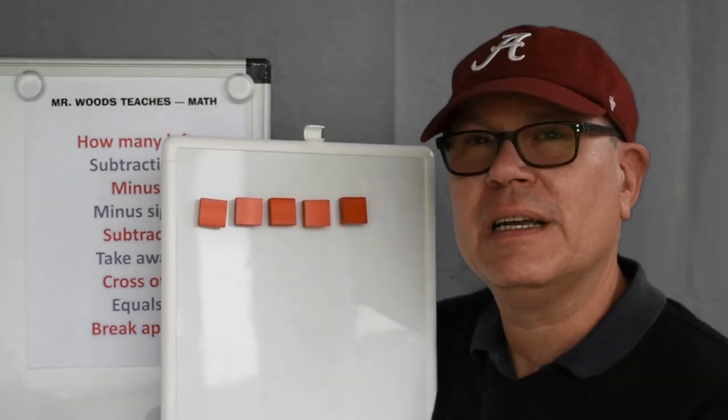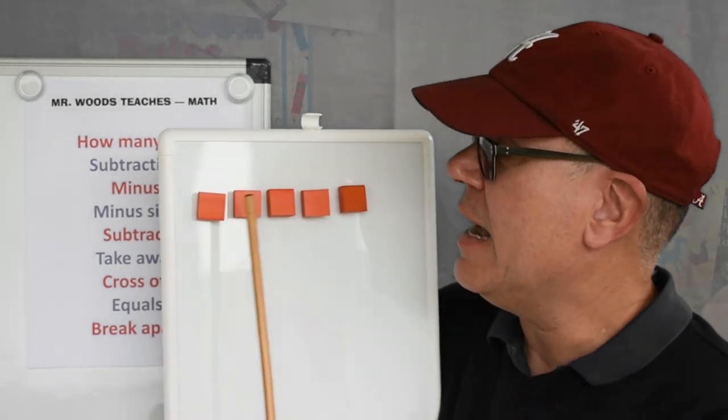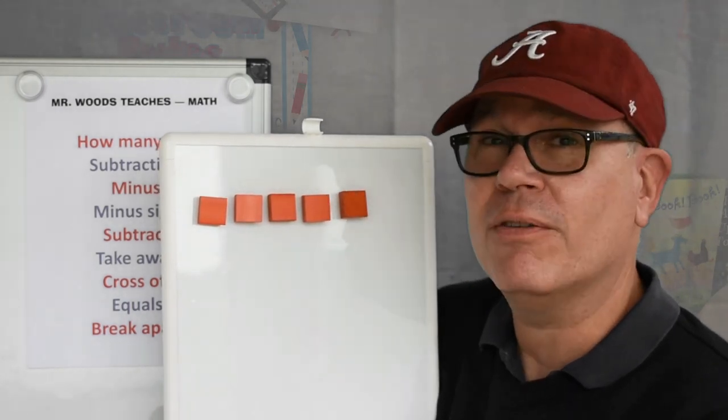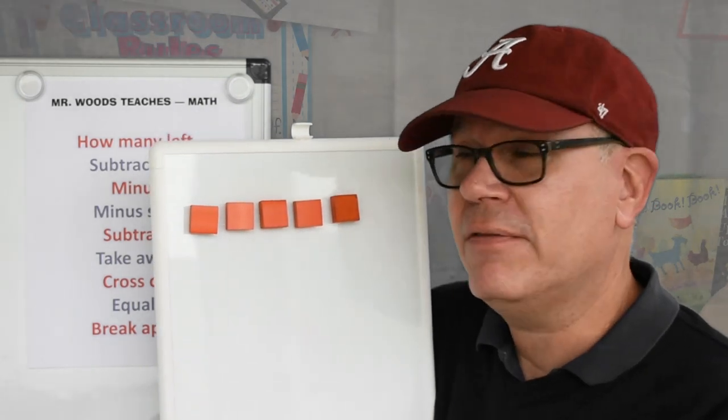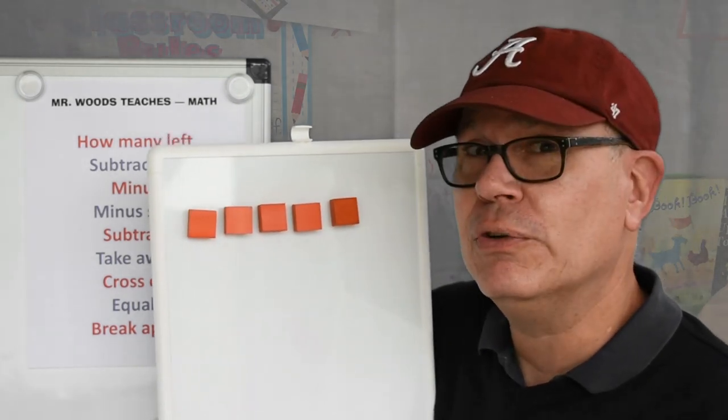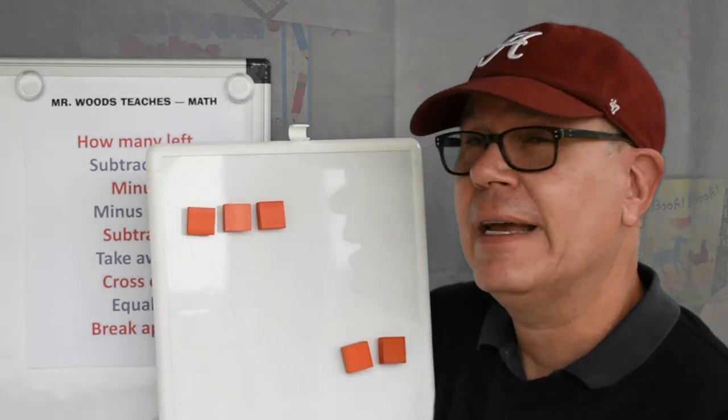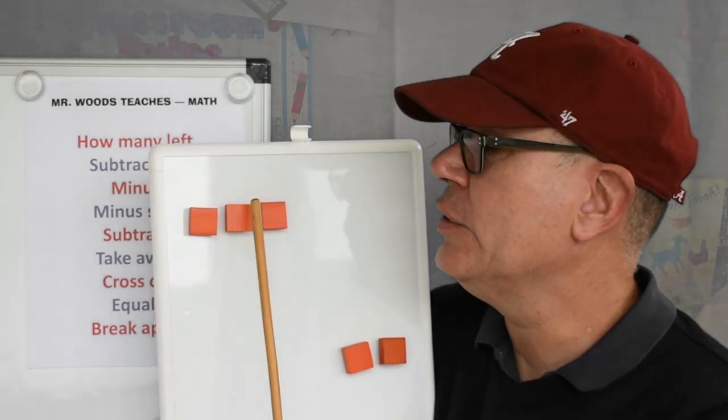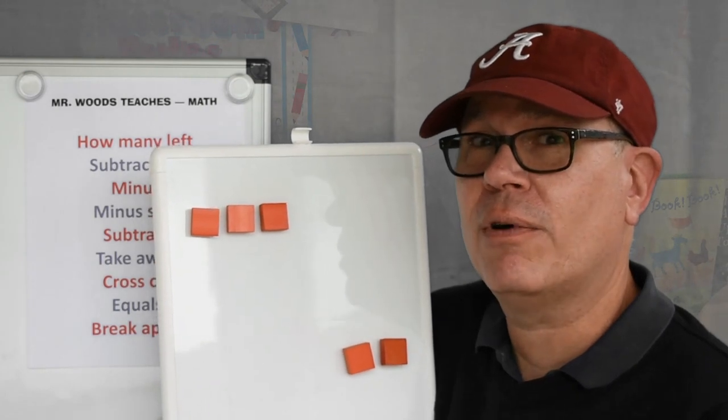Okay boys and girls. As you can see, I just have the orange squares. Let's count how many we have. I have one, two, three, four, five orange squares. If I have five and I take away two, how many do I have left? I have one, two, three. See how that works?